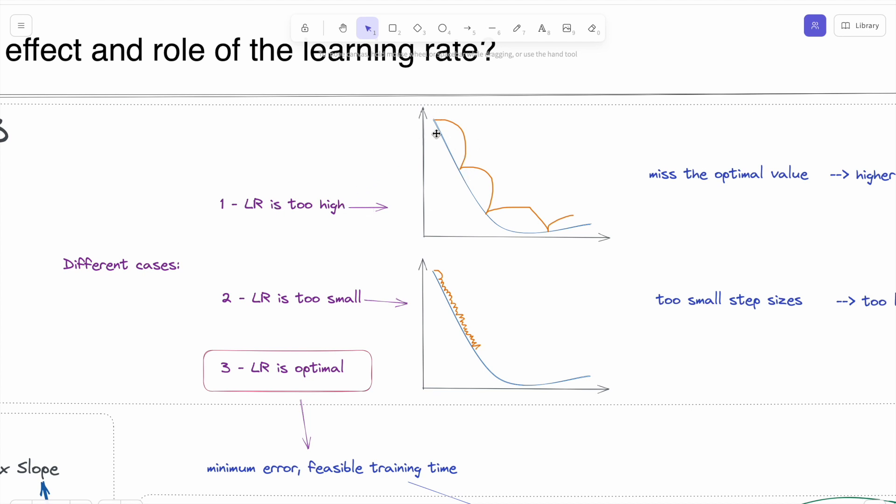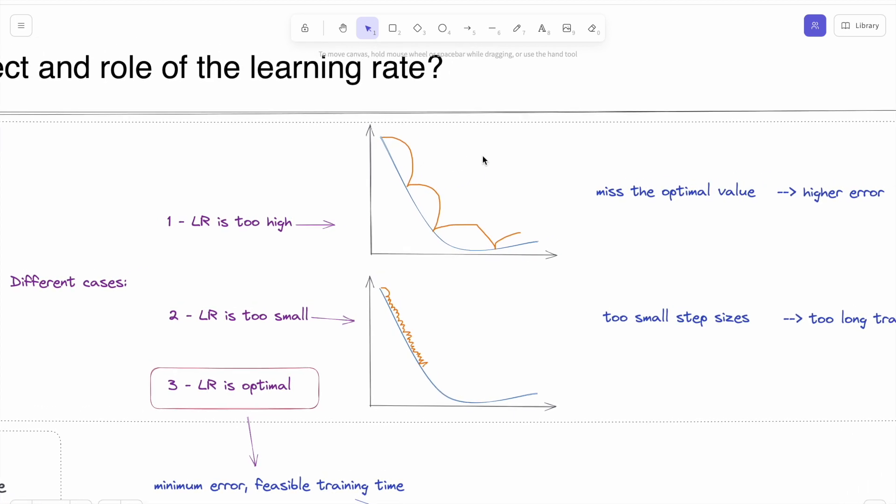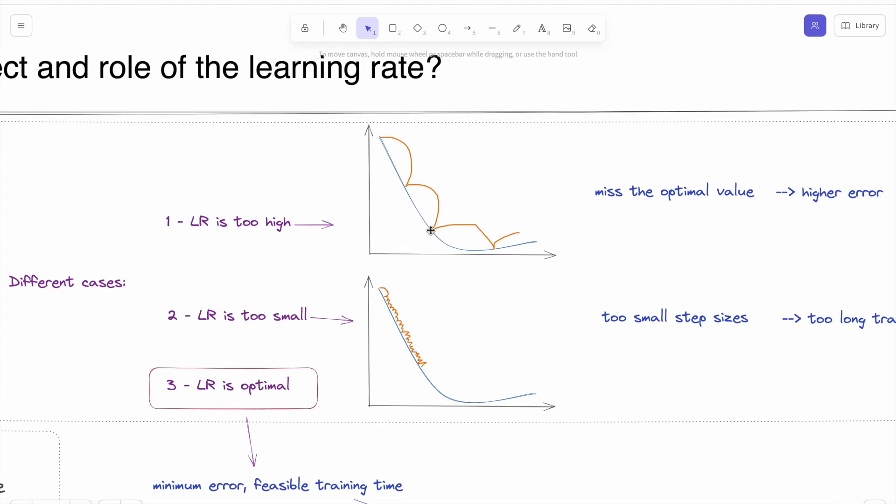If it is too high, then step size will be bigger, and in that case, as you see here, we can miss the optimum value, which can cause high error. Of course, the training phase will be fast because step sizes are bigger, but the error will also be high.